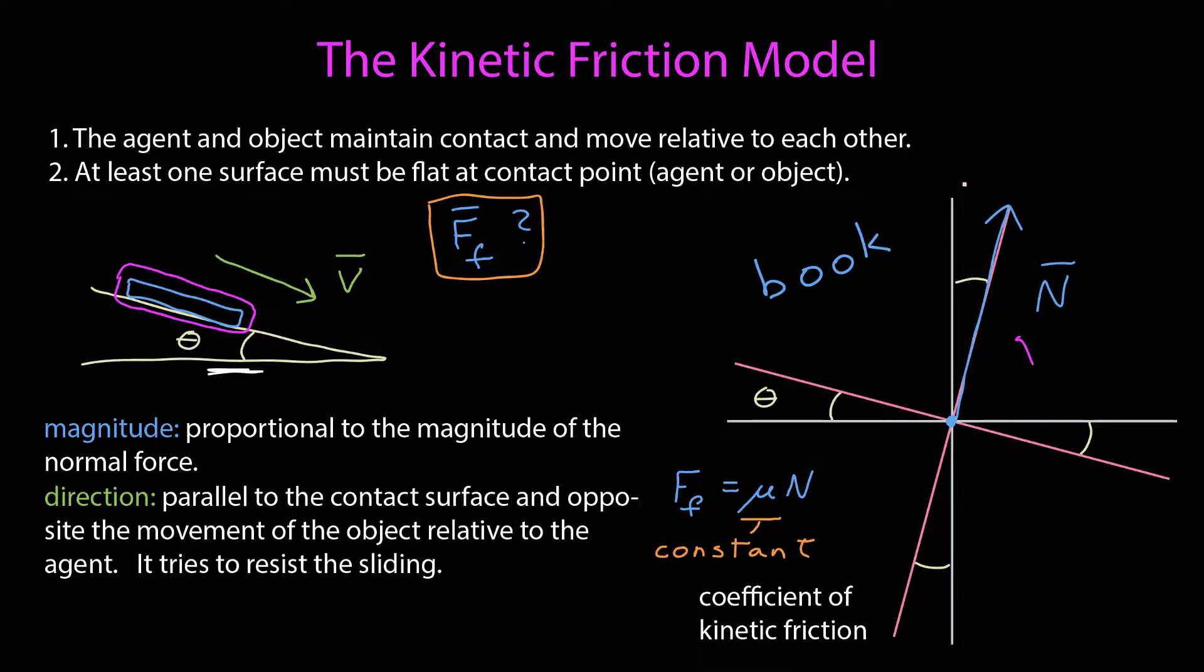Now, the direction of the frictional force in our model is parallel to the contact surface and opposite the movement of the object relative to the agent. The way to think about that is the frictional force tries to resist the sliding that's taken place. It's sliding down the incline, and so the frictional force on that object is in the opposite direction. So here I've put that frictional force on my free body diagram.